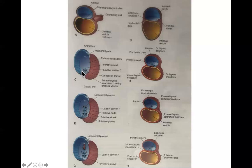The primitive streak forms a membrane at the caudal end called the cloacal membrane, which is eventually going to rupture and become the anus. The primitive streak gets longer by adding cells to the caudal end, growing in that direction. At the center of the primitive streak, a groove forms called the primitive groove. At the cranial end of the primitive streak, a round thickening of cells forms called the primitive node, and at the center of the primitive node, a structure forms called the primitive pit.